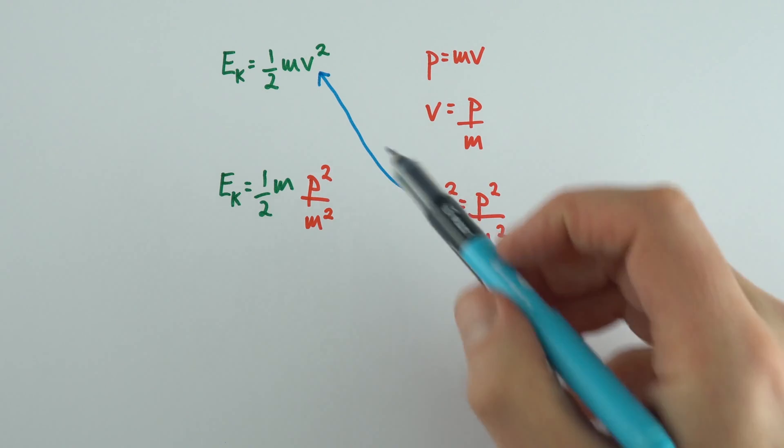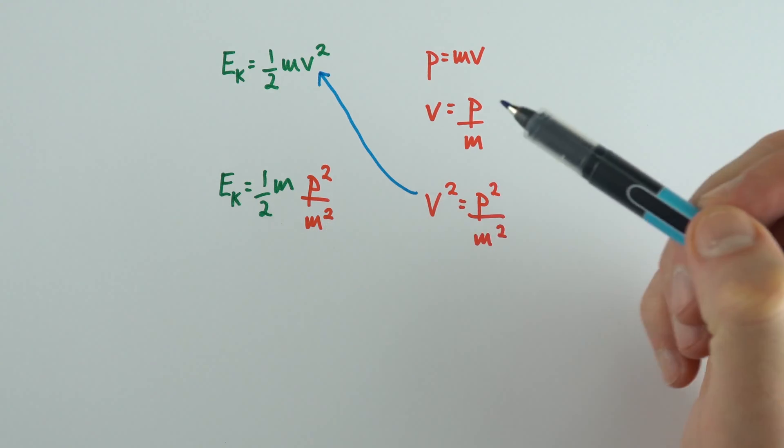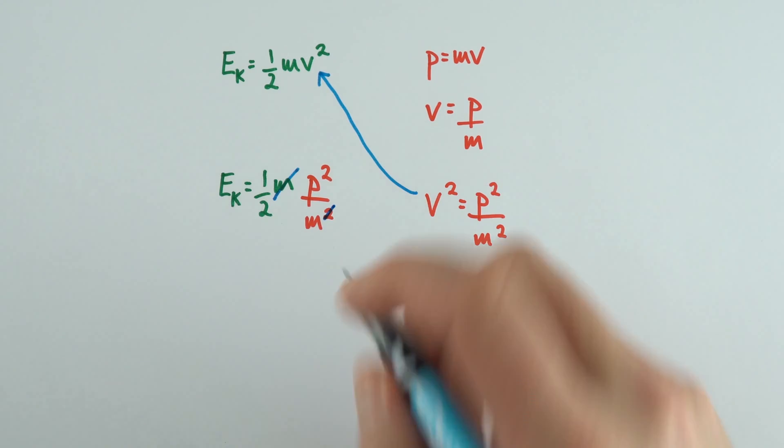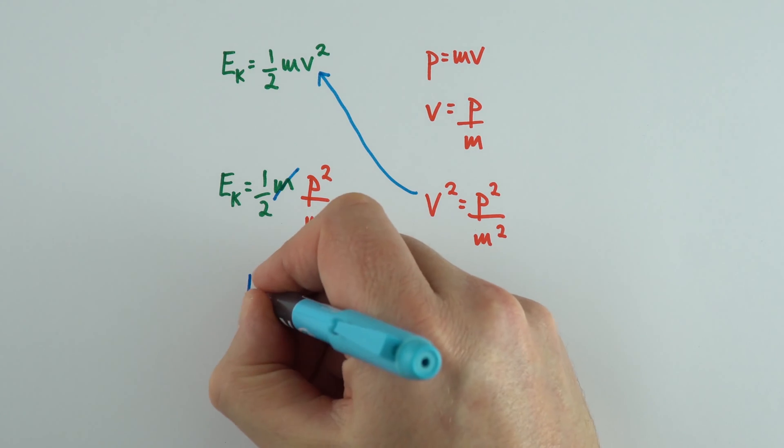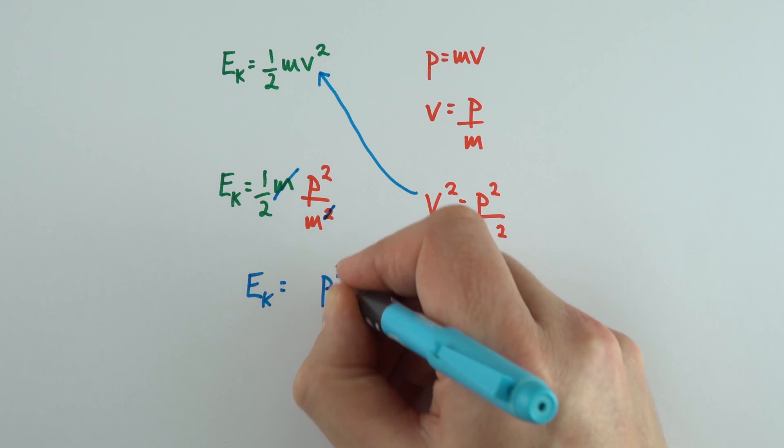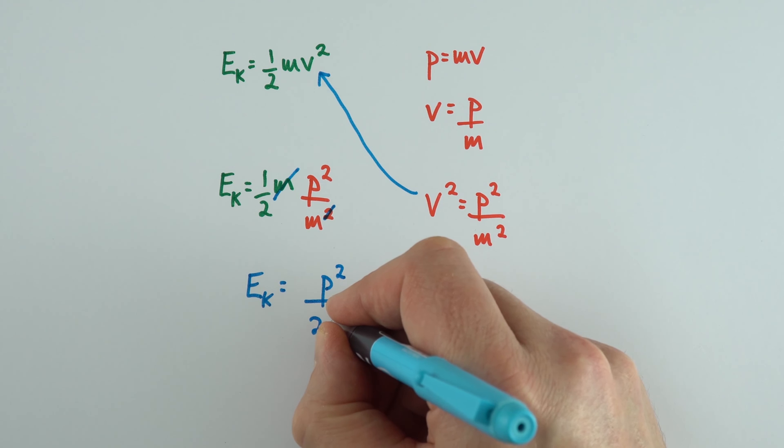Now it's looking a bit messy at the moment. We've got an m divided by m², and that means I'm going to take the m away from there, cancel the 2, and we can rewrite this as kinetic energy equals p² divided by 2m.